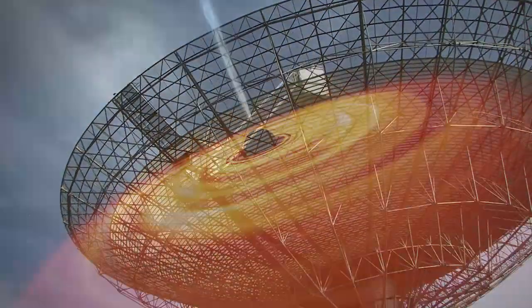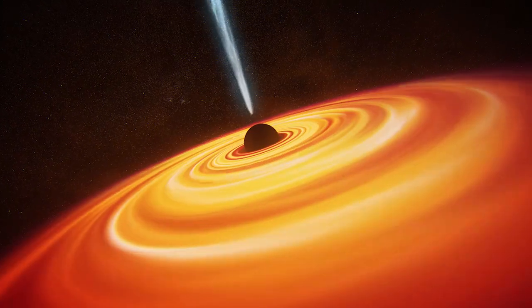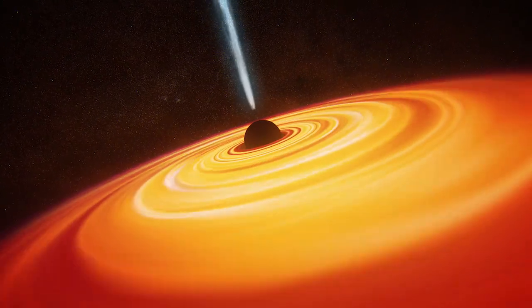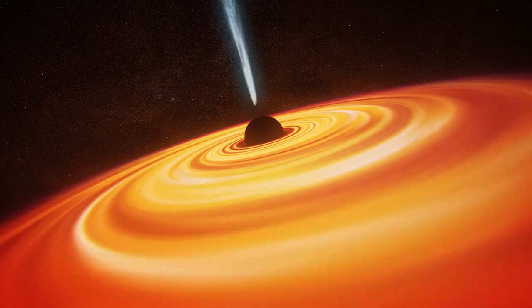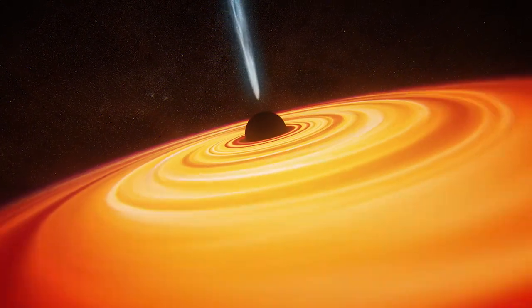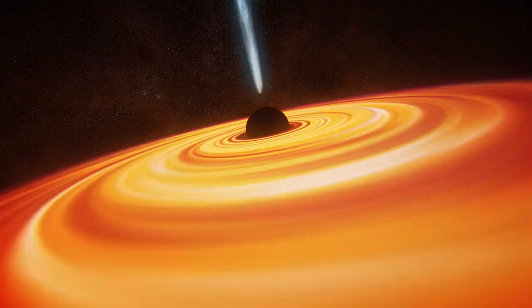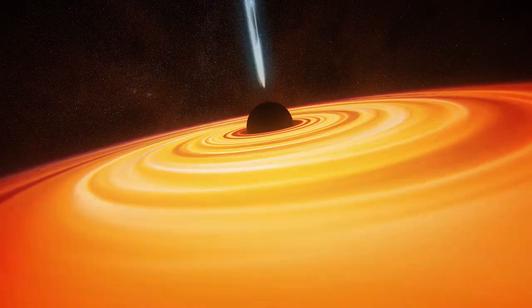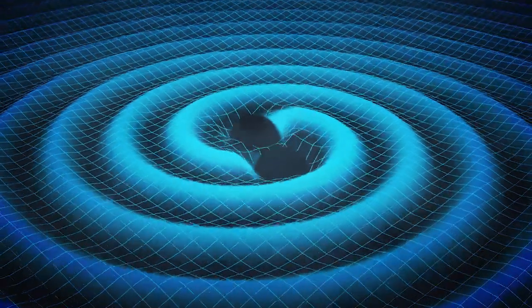Every galaxy contains a black hole at its centre. Some black holes weigh up to 10 billion times the mass of our Sun. When galaxies collide, their black holes sink to the centre of the remaining collection of stars and begin to orbit each other.